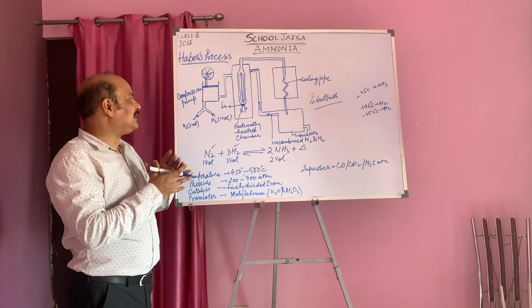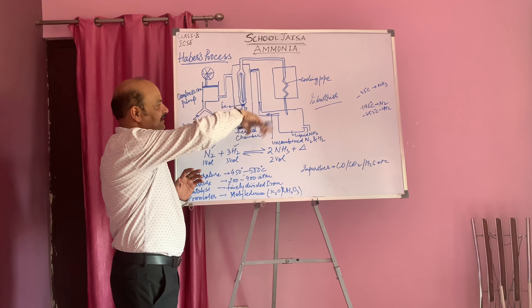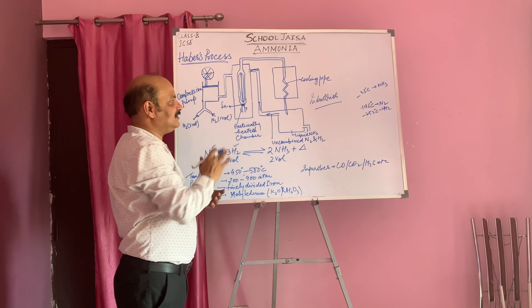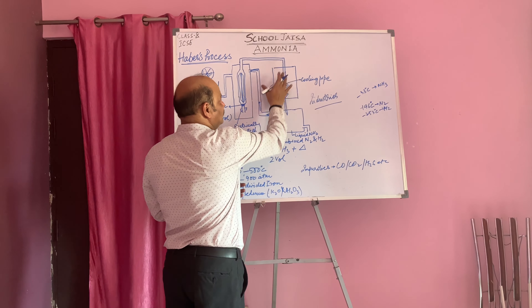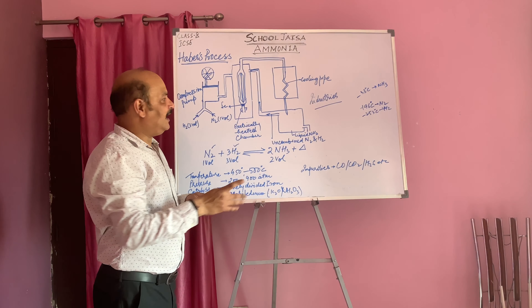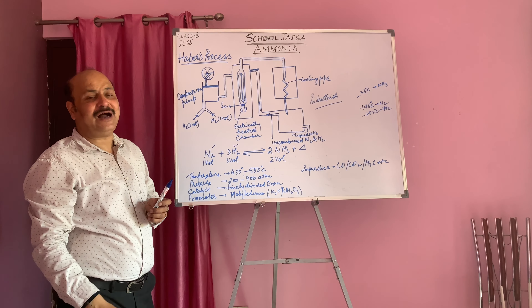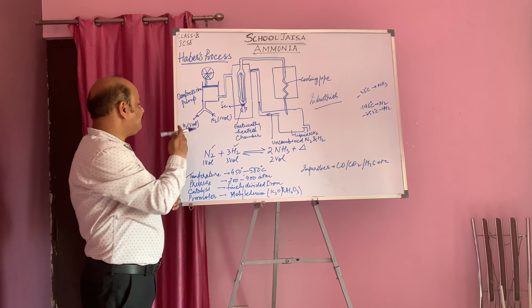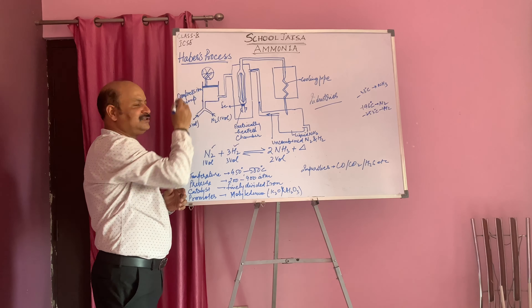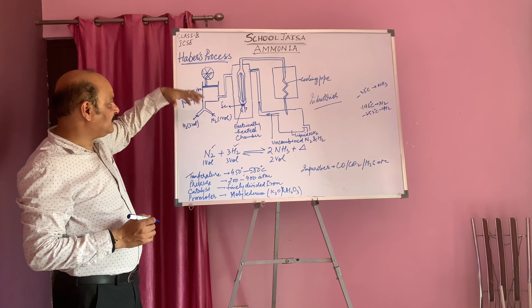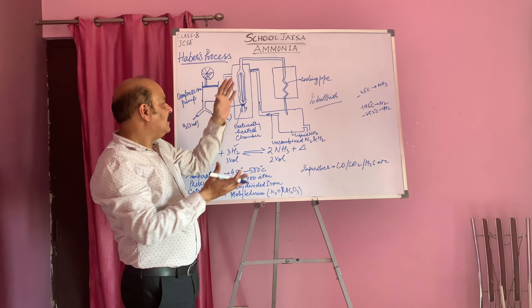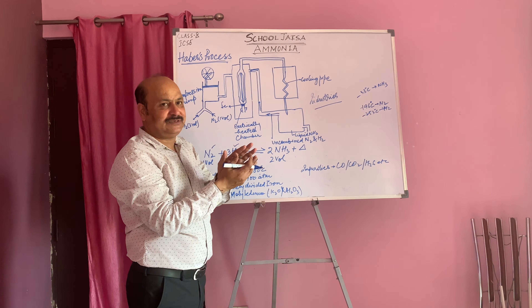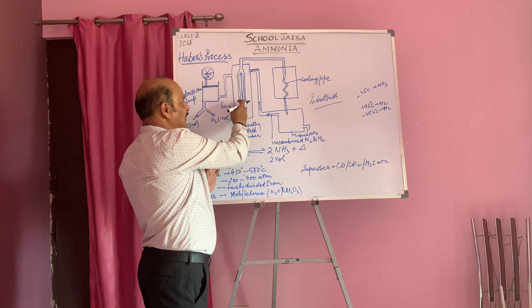How is it done and what are the conditions? Here we see the whole diagram, divided into three parts: one is the compression pump, another is the electrically heated chamber, third is the cooling system, and fourth is the collection of ammonia with some going back into the electrically heated chamber. Nitrogen and hydrogen enter into the compression pump, and with the help of the piston, pressure is applied, bringing the molecules of nitrogen and hydrogen closer together, and then that connection reaches the electrically heated chamber.